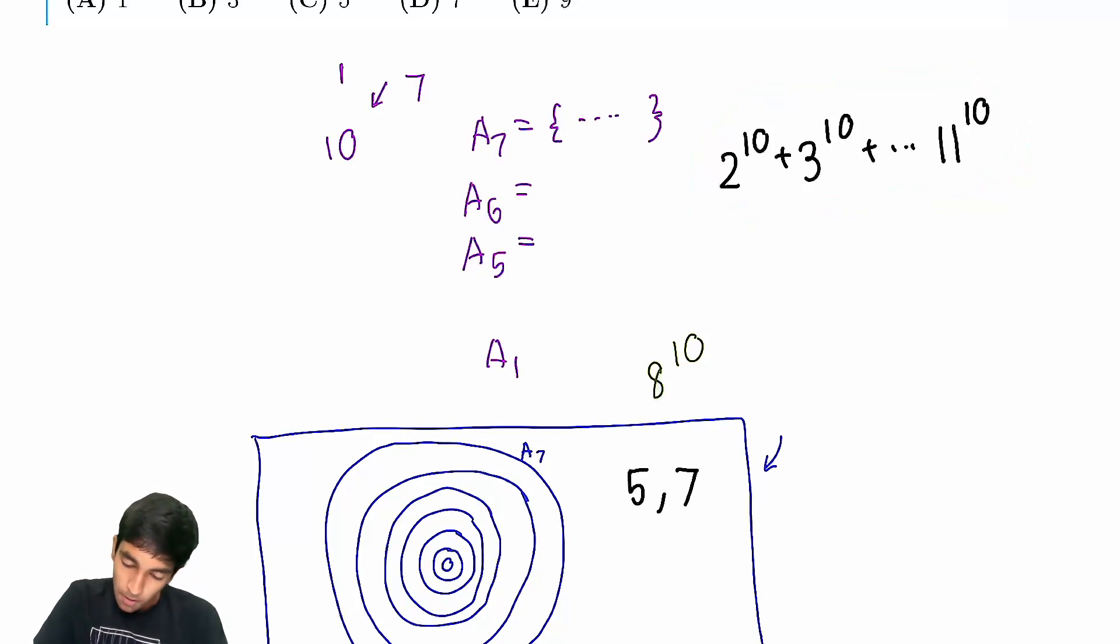So first of all, mod 2, well, these terms are clearly going to be 0, all the even terms. So we're just left with 3 to the 10, which is odd, 5 to the 10, all the way to 11 to the 10. So over here, we've got 5 different terms. Each of them is odd. So overall, the sum is going to be odd. Well, we kind of already knew that, based on the answer choices, but you know, just for completion. We have the value, it's going to be odd.